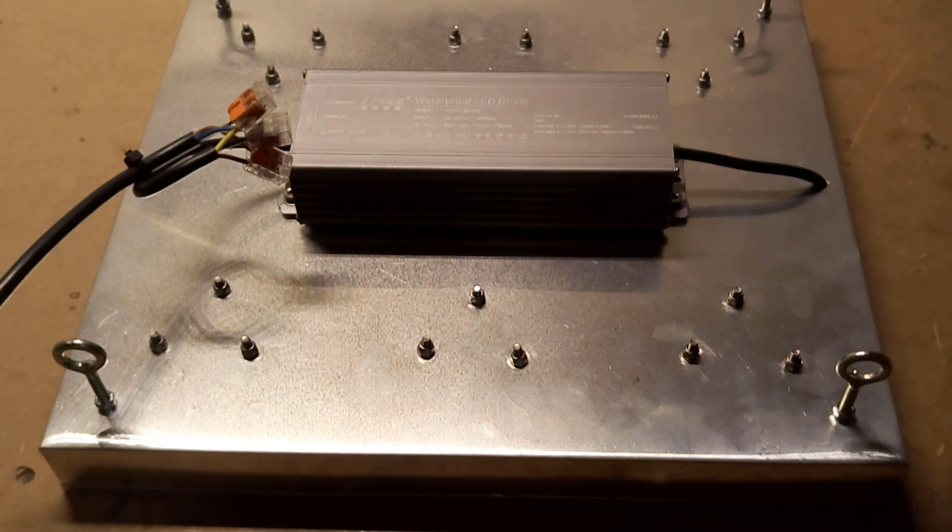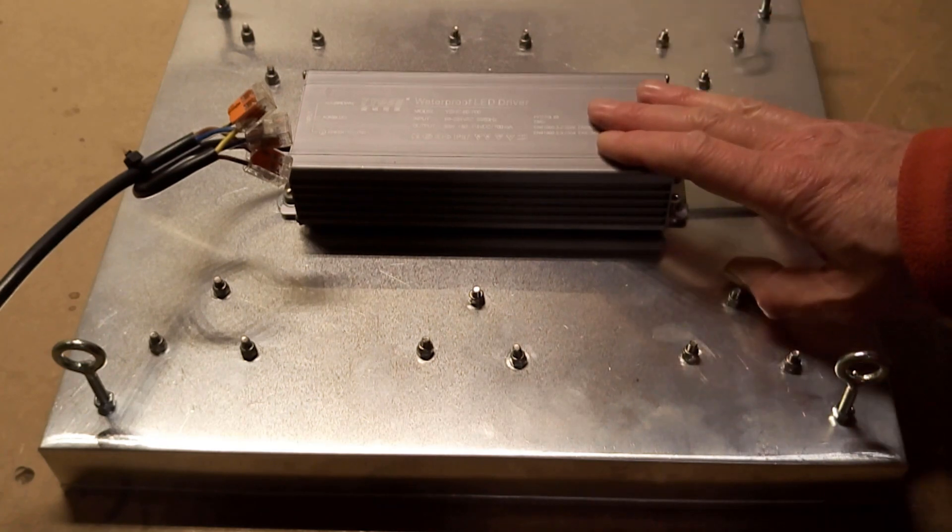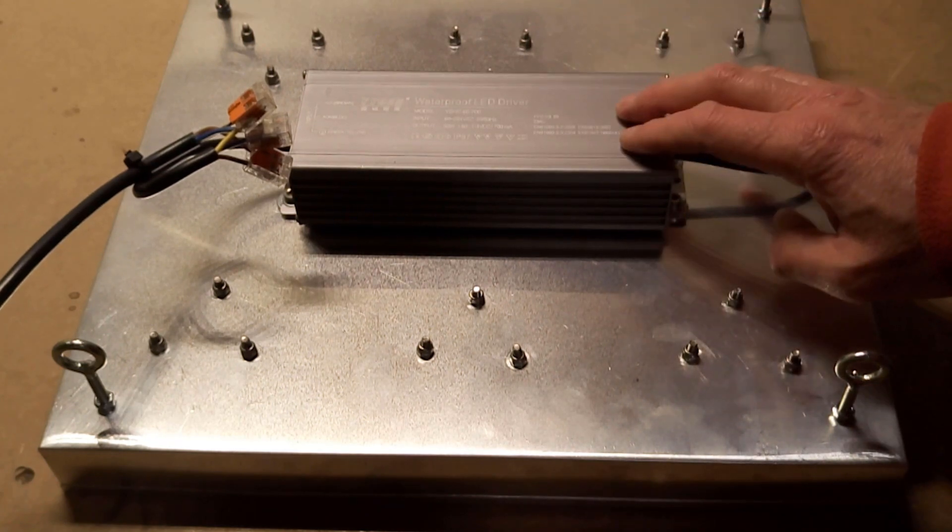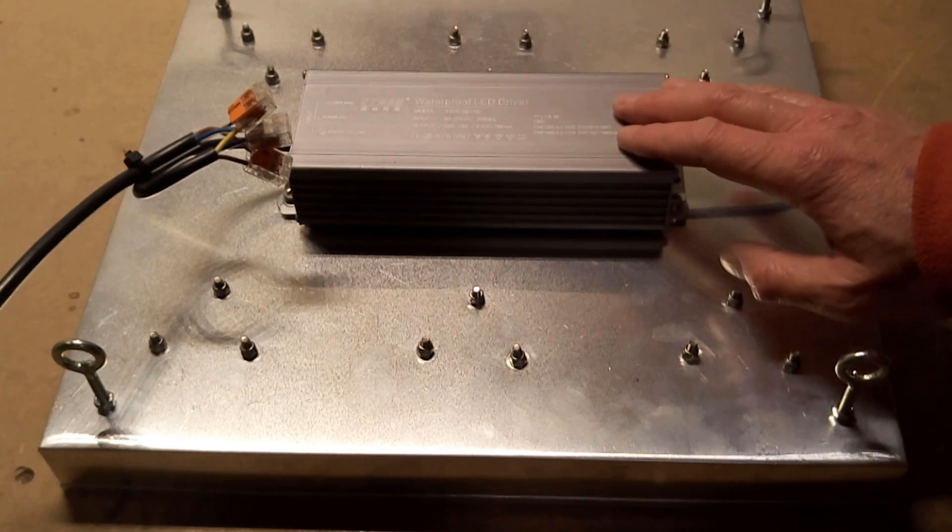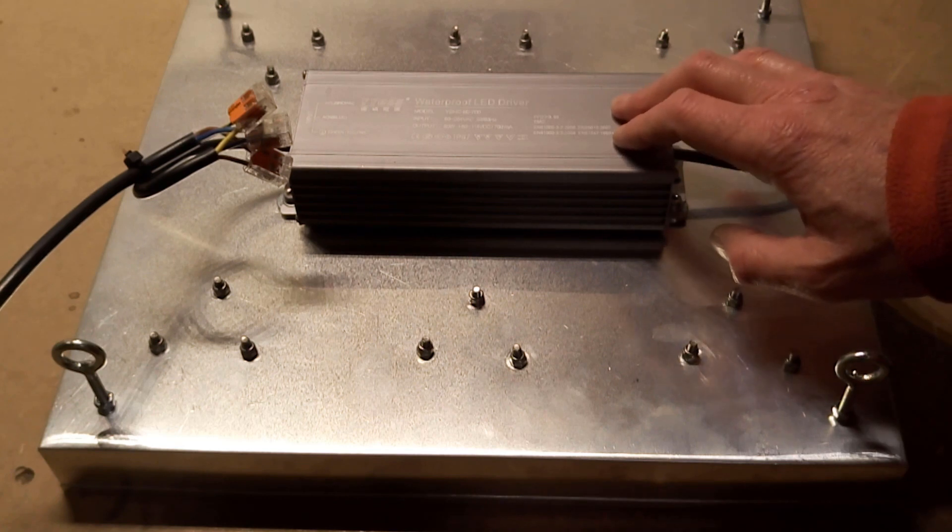For not much more than the price of a crappy one of those 1500-watt eBay or Amazon lights, which are actually only 60 watts, you can have one that's much better, will last you much longer. And of course, because you've built it this way, it's very easy for you to modify it, repair it, or anything else, whereas the other ones you can't.